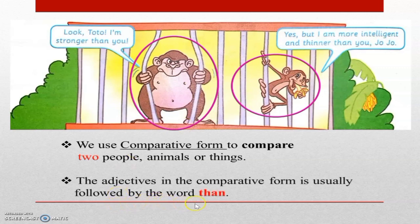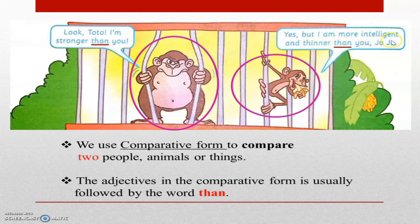The adjectives in the comparative form are usually followed by the word "than." For example, "Look, Toto. I am stronger than you." So the word "than" is to compare between this monkey and that monkey. Which one is stronger? This monkey is stronger. And this one: "But I am more intelligent and thinner than you, Jojo." So it is to compare between Toto and Jojo. Jojo is stronger, but Toto is much thinner and more intelligent.